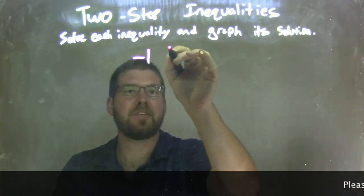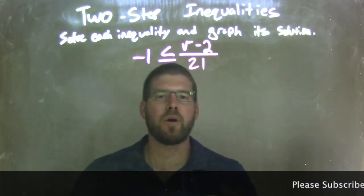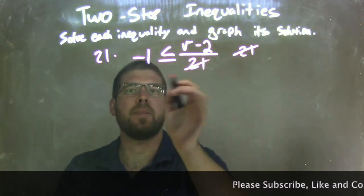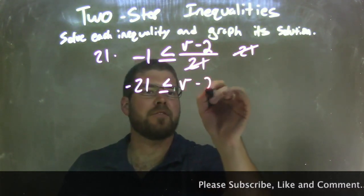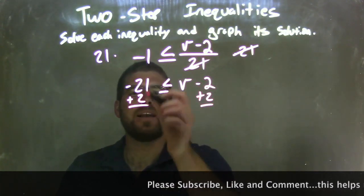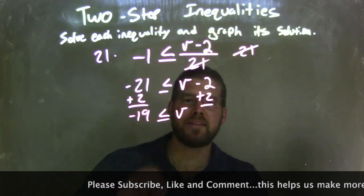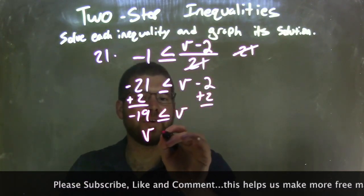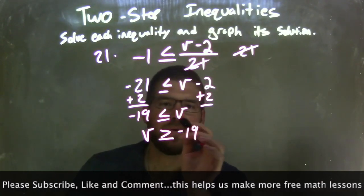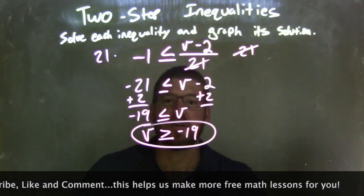Negative 1 is less than or equal to b minus 2, all over 21. My first step: multiply both sides by 21. That leaves me with negative 21 is less than or equal to b minus 2. Now I add 2 to both sides: negative 21 plus 2 is negative 19, and that's less than or equal to b. I can rewrite that — b is greater than or equal to negative 19. Now b is isolated and written first.